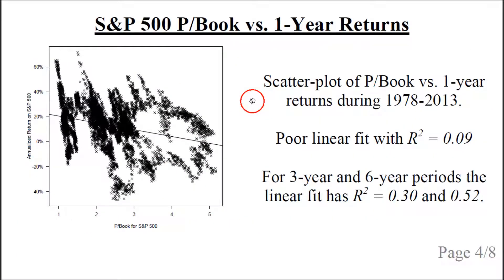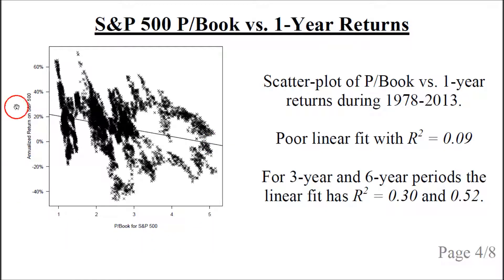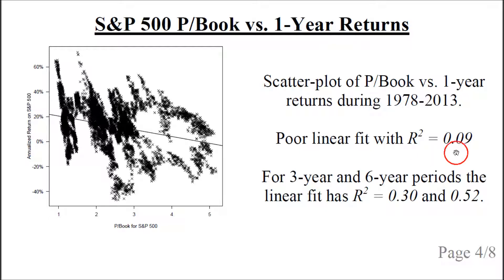Let's look at a scatter plot of the price-to-book ratio versus one-year returns of the S&P 500. On the horizontal axis we have the price-to-book ratio, and on the vertical axis we have the annualized return, which is the price return of the S&P 500 plus the dividend return. We fit a straight line, and it tilts down a bit, suggesting that as the price-to-book ratio gets higher, the annualized return gets lower. However, the fit is not very good — it has an R-squared value of 0.09, meaning the observation points are highly dispersed around the fit.